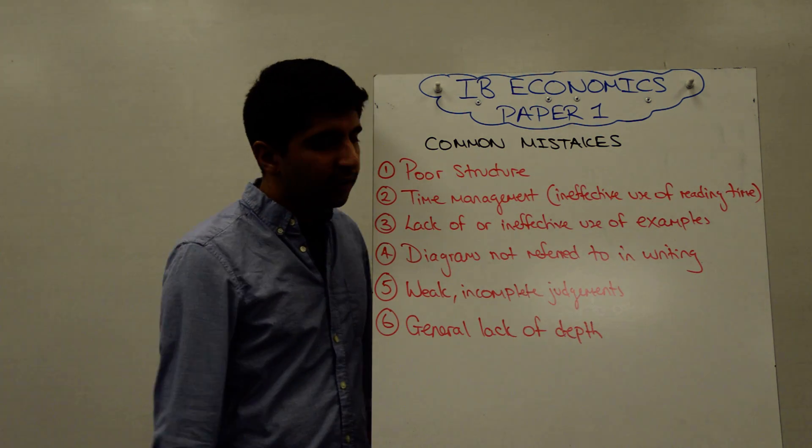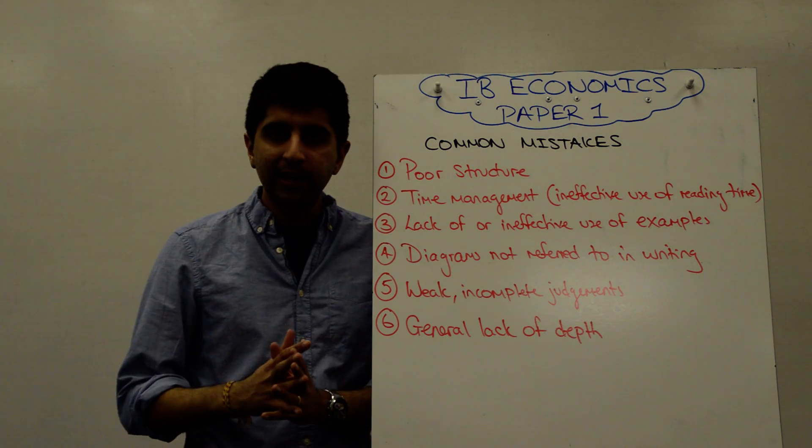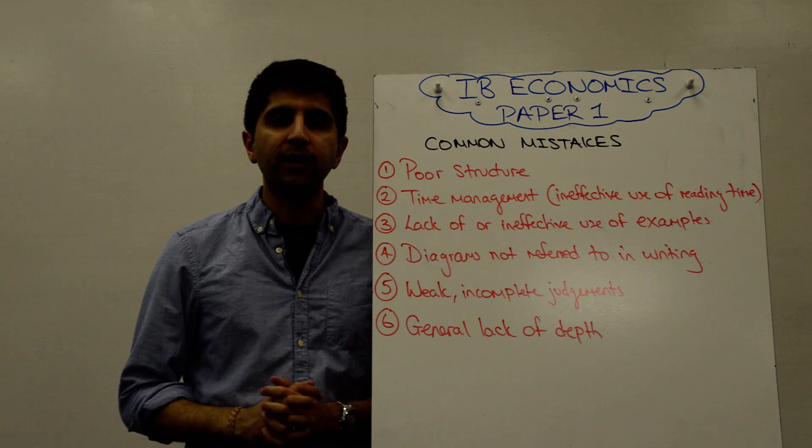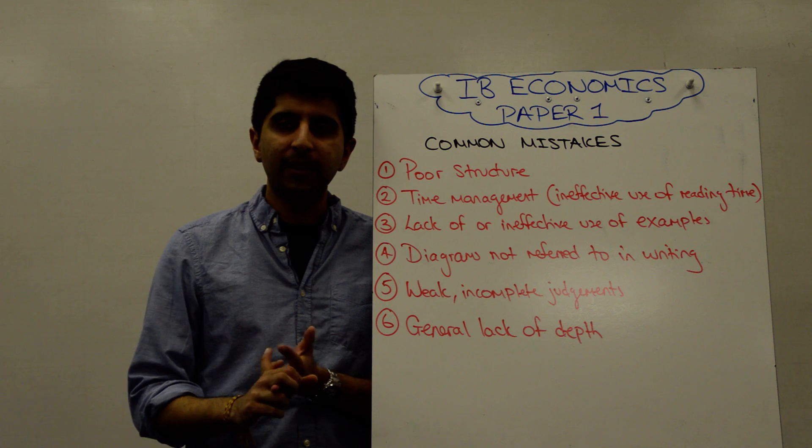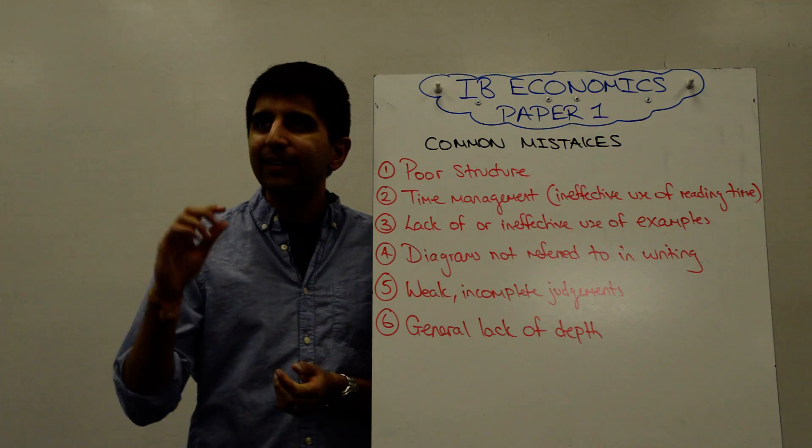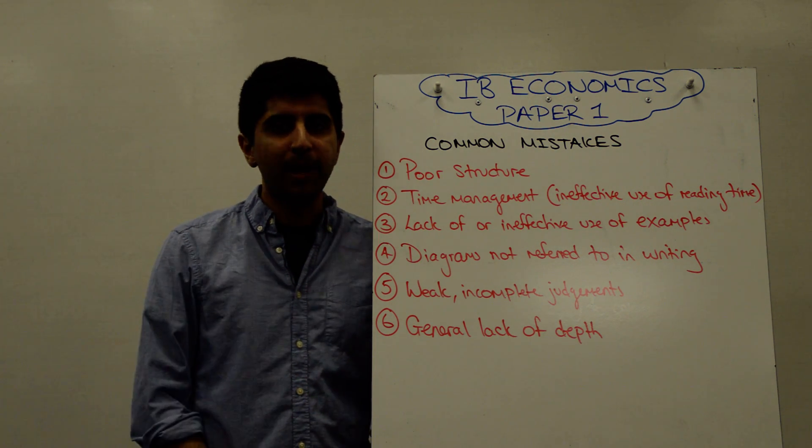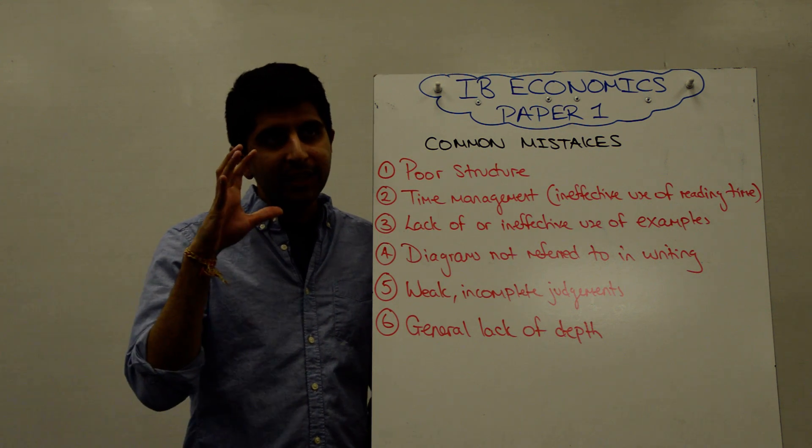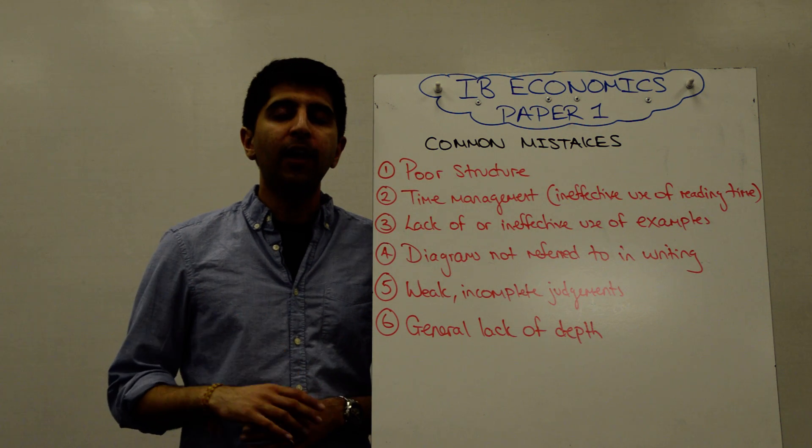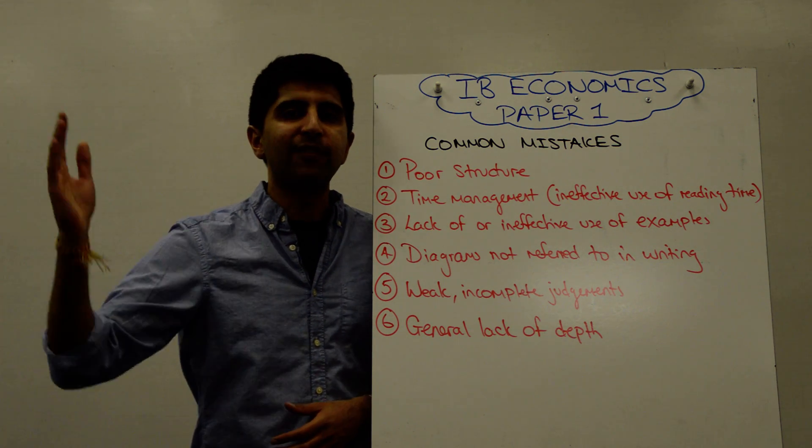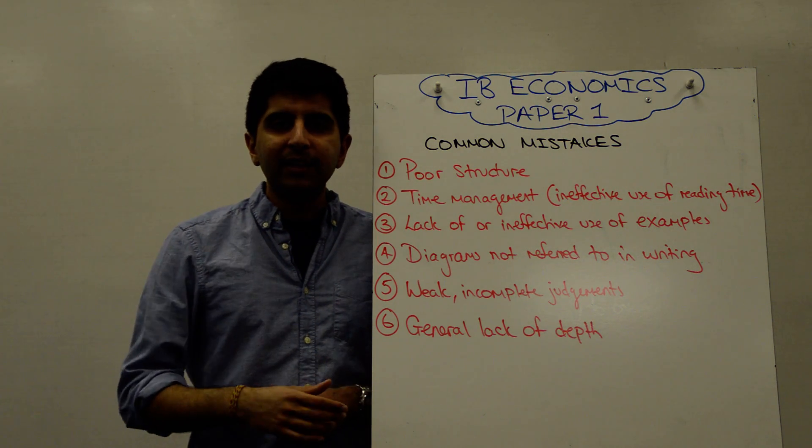A lack of or ineffective use of examples—I've mentioned this clearly in previous videos. It's probably IB examiners' most common complaint: a genuine lack of examples in Paper One, where you've got to come up with examples yourself. It's amazing how students ignore this completely or just lump examples at the end of their essays, assuming that will be enough.